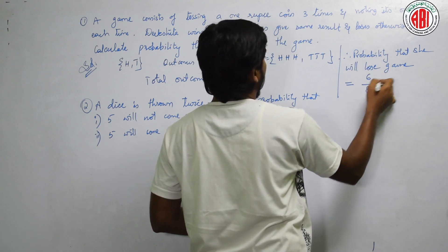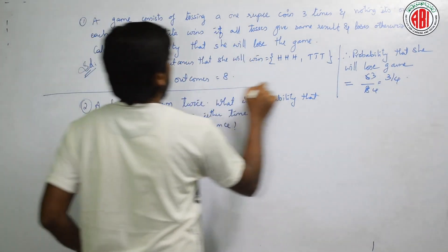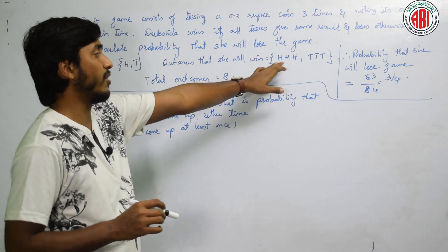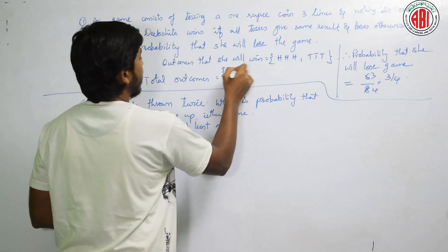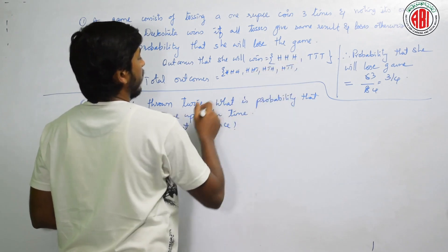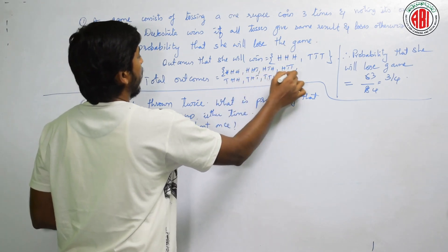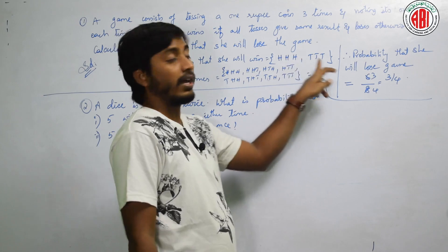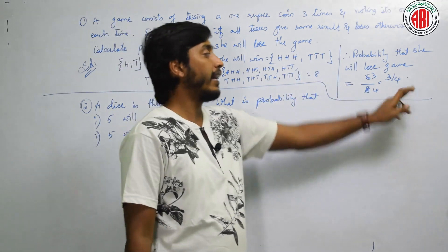Therefore, probability that she will lose game is how much is it? 6 by 8. 2 threes are, 2 fours are. The answer is 3 by 4. Is it okay? If you want to write, you can write all these outcomes also.